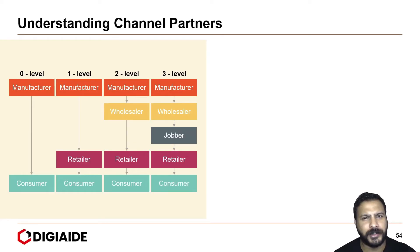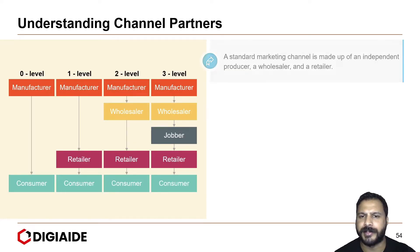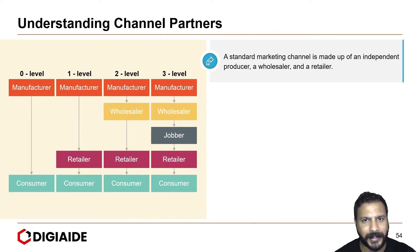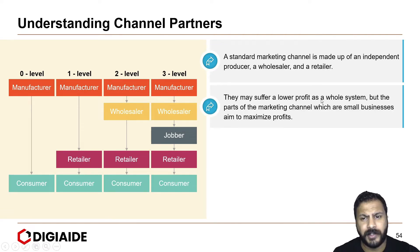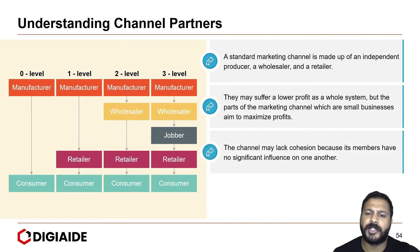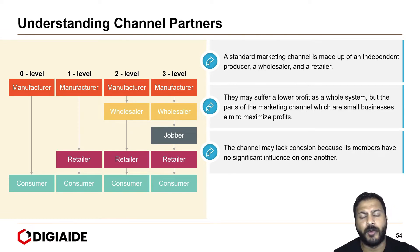Let's begin with understanding channel partners. A standard marketing channel is made up of an independent producer, a wholesaler, and a retailer. They may suffer a lower profit as a whole system, but the parts of the marketing channel, which are small businesses, aim to maximize profits. The channel may lack cohesion, but its members have no significant influence on one another.